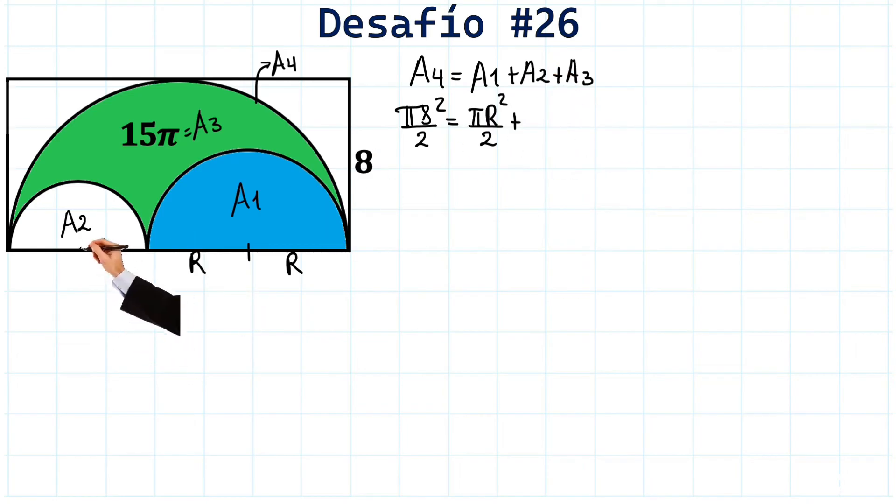Which we will call its radius lower case r. Lower case r here and lower case r there. Therefore, the area would be π times lower case r squared over 2. And plus area 3. But if we have area 3, it is 15π. Let's note it. 15π over here. And notice that we can multiply by 2 to simplify these two here. Let's do it.